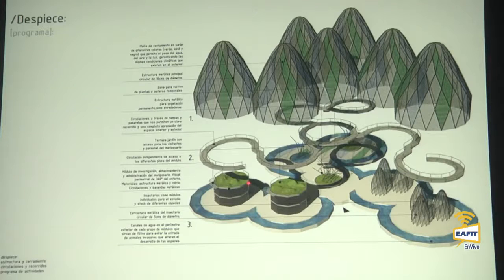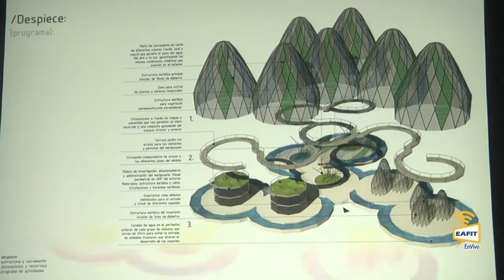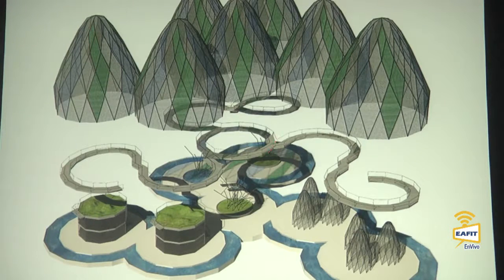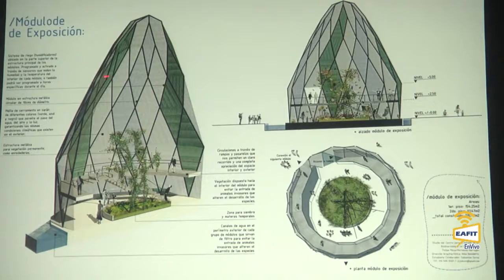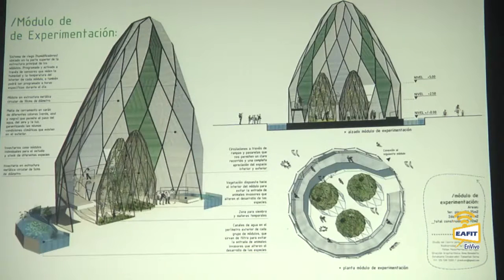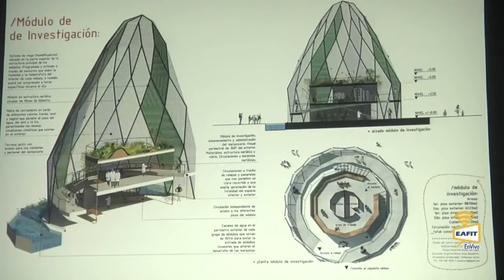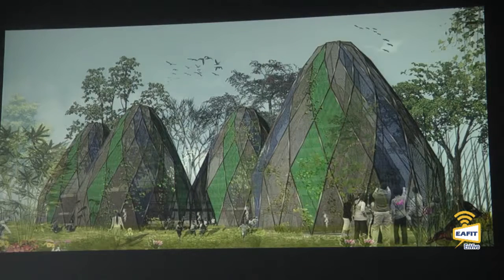This is the typical plan, but it can change if you connect more modules. The system includes research buildings, insectariums, and exposition modules. We proposed a metal structure with natural fibrous textiles to create the enclosures. The access module is like a garden and a starting point for your walk. Then you have the exposition module where you can be in contact with butterflies, then the experimentation and insectariums, then the research modules. This competition didn't have a specific place — it was an abstract situation set somewhere in the tropics.